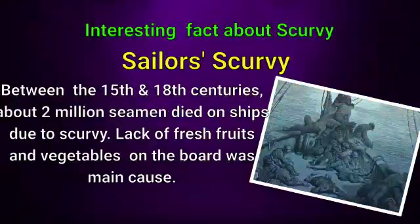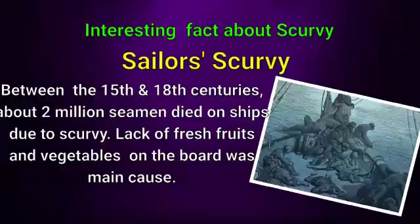An interesting fact about scurvy: it is also known as Sailor's scurvy. Between the 15th and 18th centuries, about 2 million seamen died on ships due to scurvy. Lack of fresh fruits and vegetables on the boat was the main cause. According to historian Stephen Brown, scurvy was a major cause of deaths at sea — more than storms and shipwrecks.